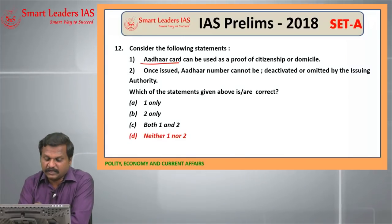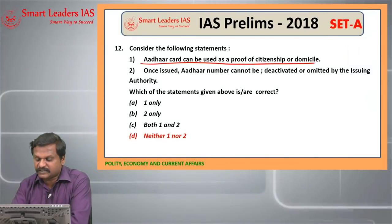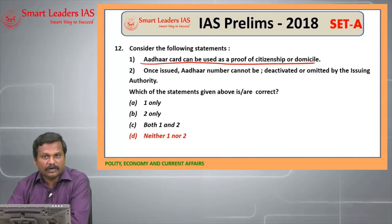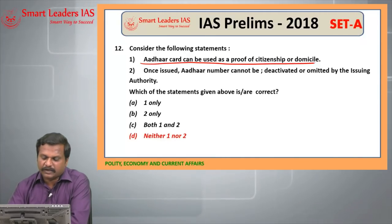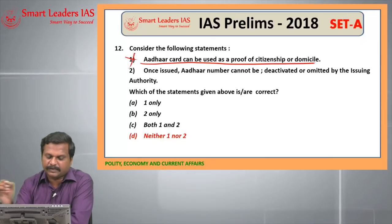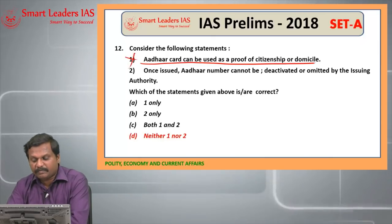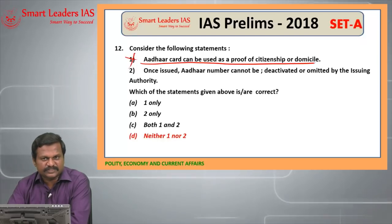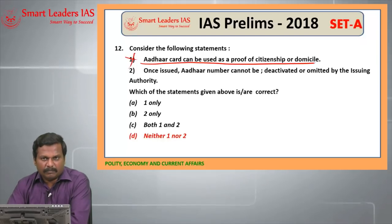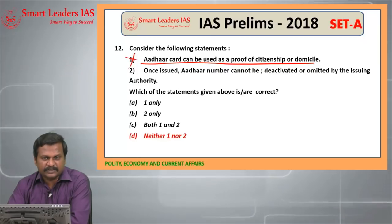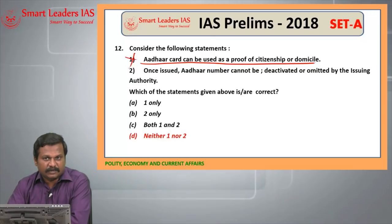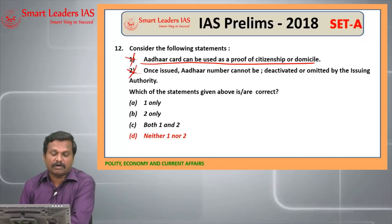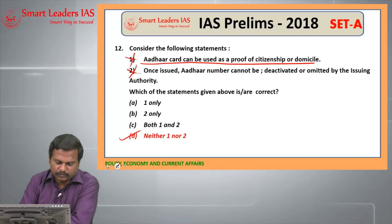Twelfth question: Aadhaar card cannot be used as a proof of citizenship or domicile — it is not granting any right to citizenship nor is it proof of citizenship according to the Kolkata High Court, so the first statement is a wrong statement. Once issued, Aadhaar card can be deactivated — Sections 27 and 28 of the Aadhaar Regulation 2016 say that if more than one Aadhaar card is given to the same person or if the biometric data is not matching, the Aadhaar card can be deactivated. Both statements are wrong; the answer is neither one nor two.